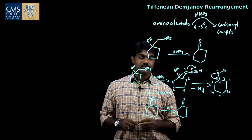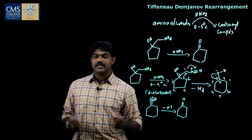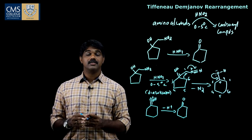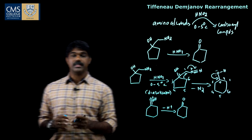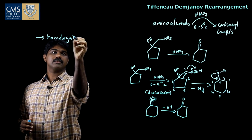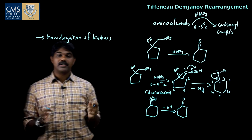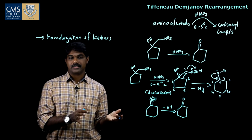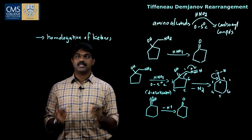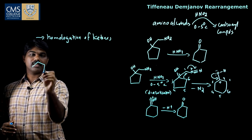The Tiffeneau-Demjanov rearrangement reaction converts amino alcohols in the presence of nitrous acid to form carbonyl compounds — here we get a ketone as the main product. This reaction is widely used for homologation of ketones. Homologation means if you have a five-membered carbonyl compound you can make it a six-membered carbonyl compound, or four-membered to five-membered.